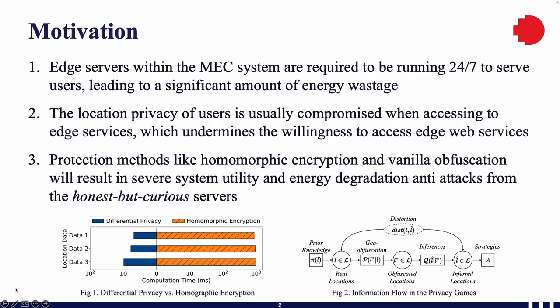The existing protection methods like homomorphic encryption and vanilla geo-obfuscation will both result in severe system utility and energy degradation, especially under attacks from the honest-but-curious servers.